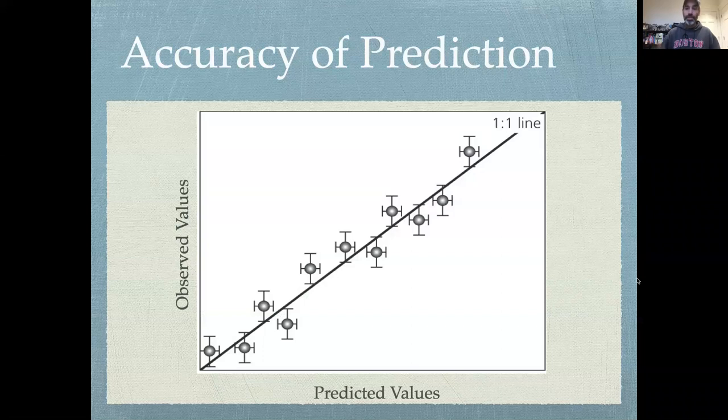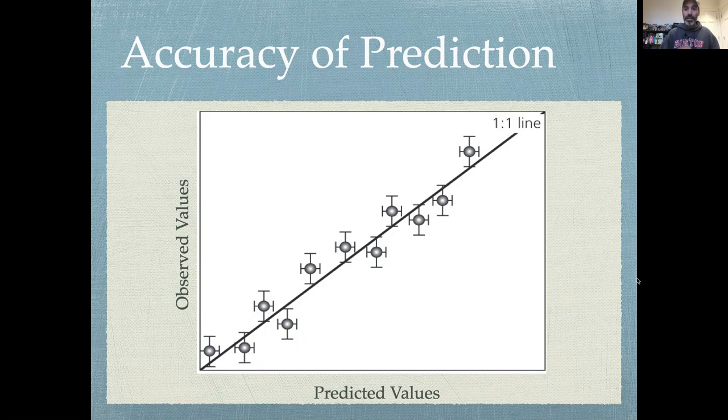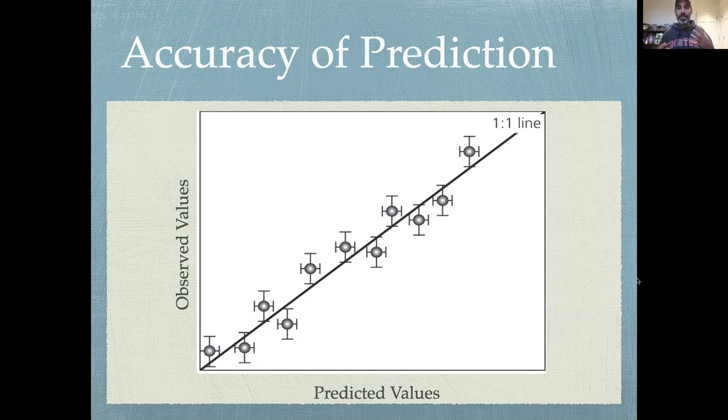One of the first things that can be done on pretty much any model is plotting the predicted values that come out of the model versus what's actually observed in reality. This is known as a predicted-observed plot and this predicted-observed plot is really a workhorse of model assessment. It shows up constantly as a first level assessment.